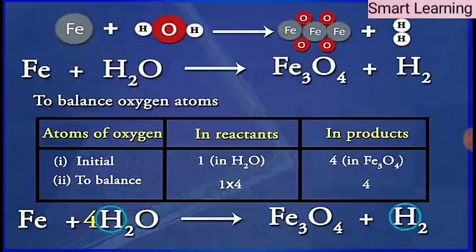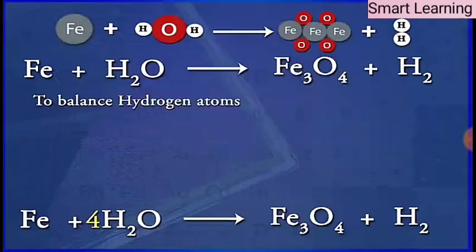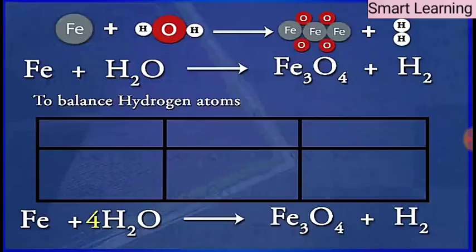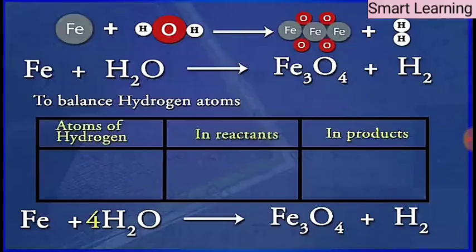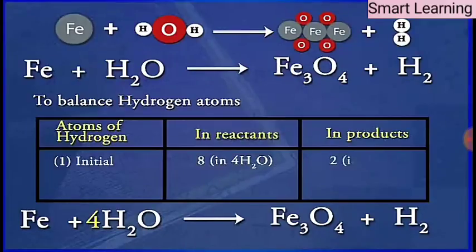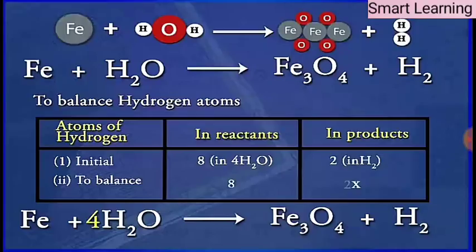Now the oxygen atoms are balanced, but the iron and hydrogen atoms are still not balanced. We can clearly observe that there are 8 hydrogen atoms on the LHS but only 2 hydrogen atoms on the RHS. To balance the hydrogen atoms in this equation, we will have to make the number of atoms of hydrogen as 8 on the RHS as well.